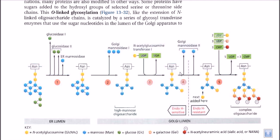Let us talk about the chemical modification of protein inside the Golgi vesicle. As we have told before, in Golgi bodies the protein which is made in the endoplasmic reticulum lumen is carried out via the COPII vesicle, and inside the COPII vesicle the protein finally comes and docks with the Golgi apparatus. Inside the Golgi apparatus the protein moiety is being modified — one of those modifications is the polysaccharide attachment and polysaccharide rearrangement modification.